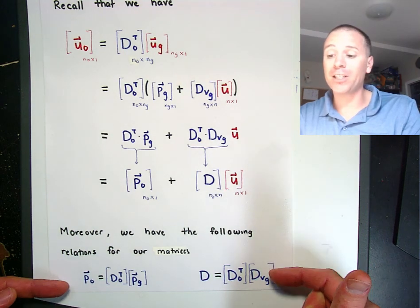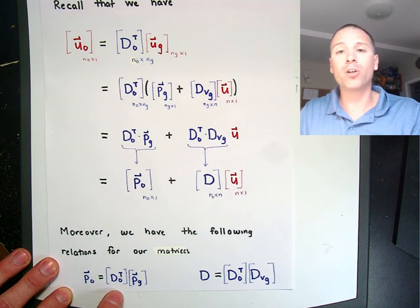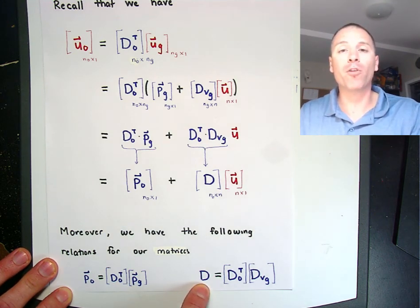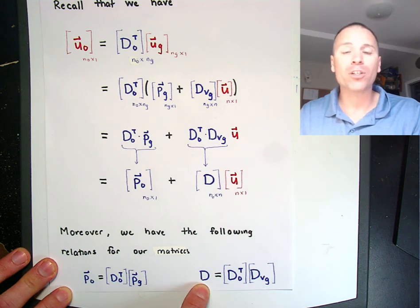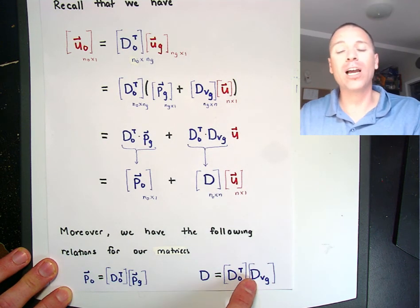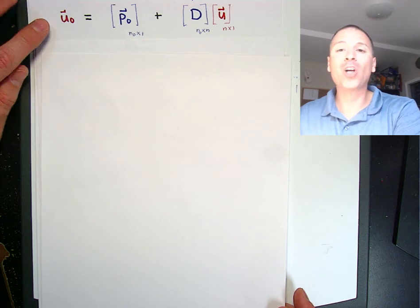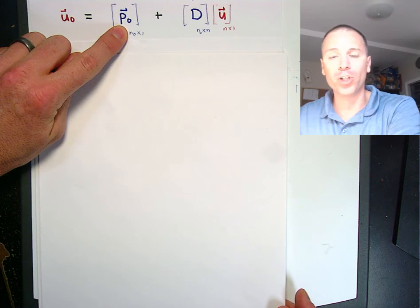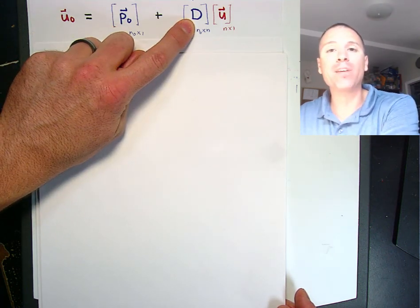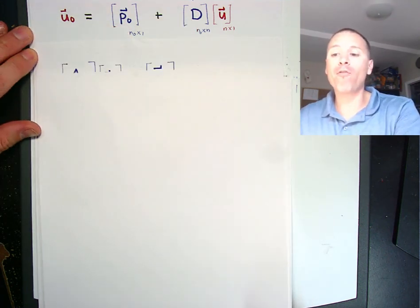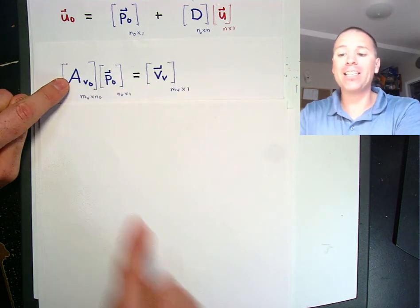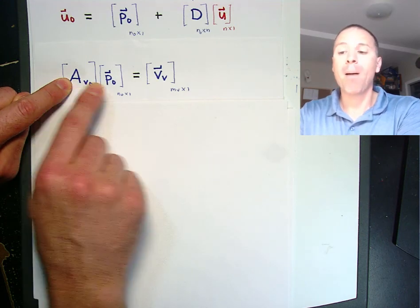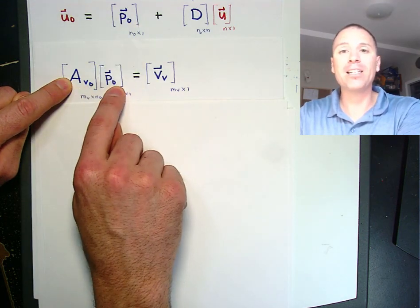We can distribute the grounding matrix to each of those terms. This we'll call a particular solution to the grounded voltage source general linear systems problem. When we combine these two together we call this the grounded voltage source deflation matrix D. The vector u is our minimal set of independent node voltage potentials needed to analyze the behavior of the entire circuit. To make those definitions explicit: we define p sub 0 as D sub 0 transpose times p sub g, and the deflation matrix D for the voltage sources and ground combined is D sub 0 transpose times D sub vg.